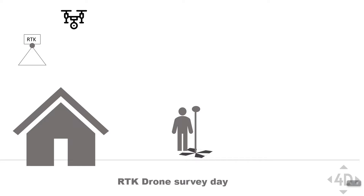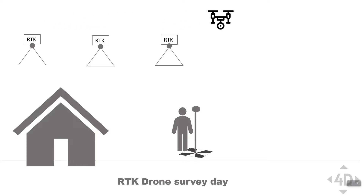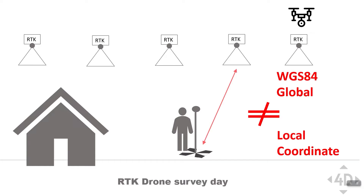There is one main source of error, and this is the transformation between your drone coordinate system, WGS84, and your local coordinate system where you usually record your GCPs with the GNSS receiver and your total station. The transformation between those can vary. Your local GNSS receiver and tachymeter will use a more sophisticated transformation, whereas your photogrammetry software might use a very rough one.